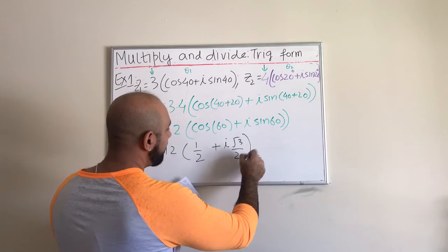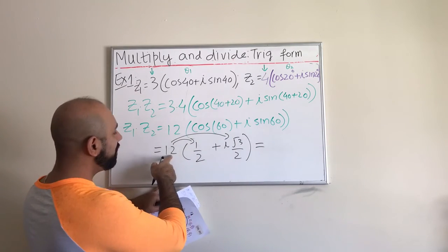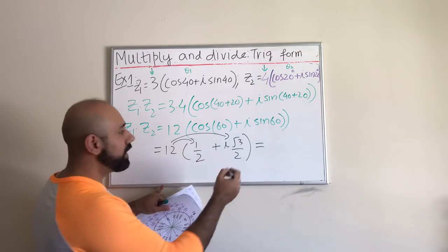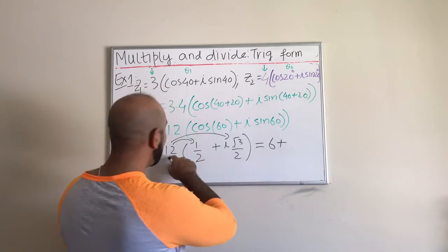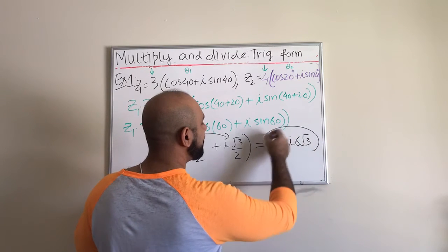When I simplify this further, I just have to distribute that positive 12. So 12 times 1 half is just 6. Again, 12 times radical 3 over 2, 12 divided by 2 is still 6, but there's an i, so 6i radical 3.